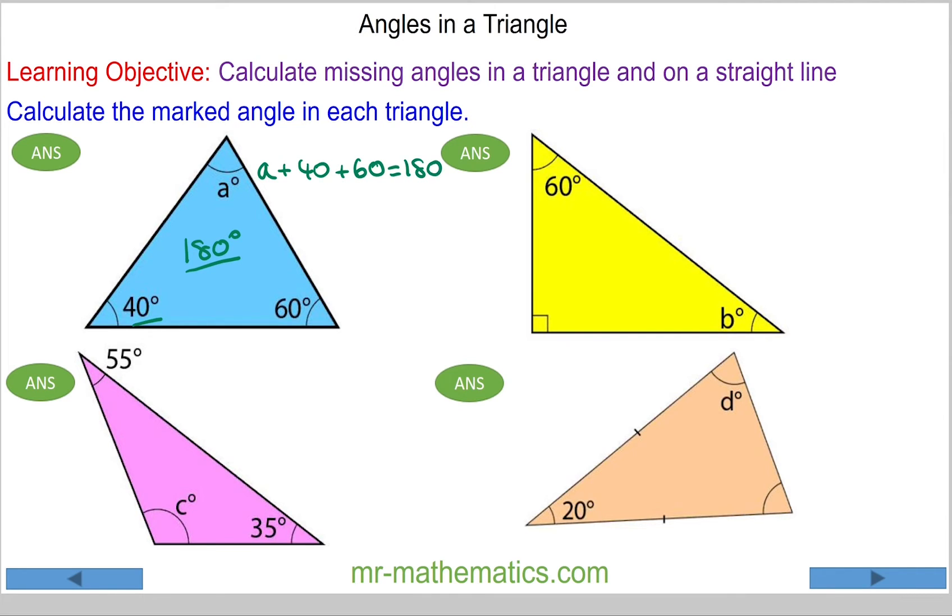40 plus 60 is 100, so a plus 100 will equal 180 degrees. If we take away the 100 from both sides, then angle a must equal 80 degrees. We can check that because 80 add 40 add 60 does make 180.